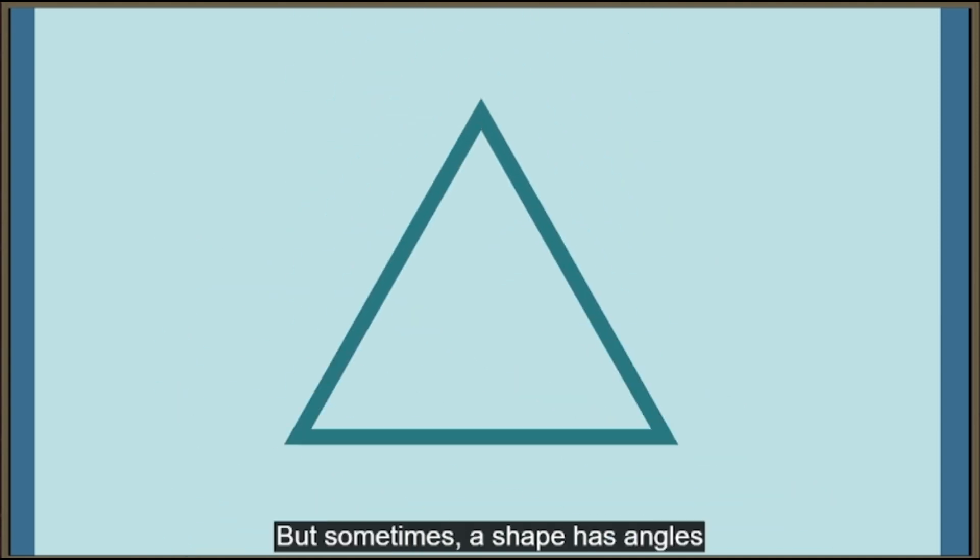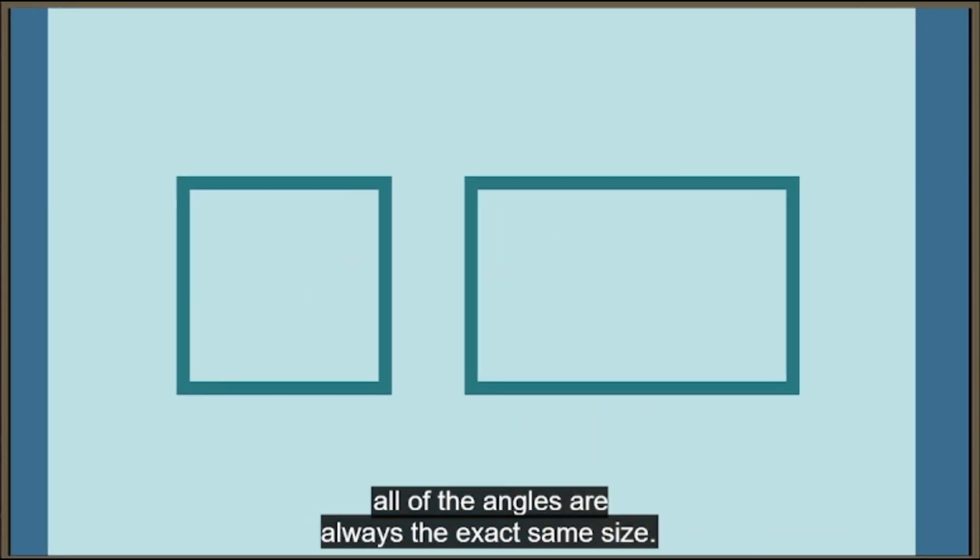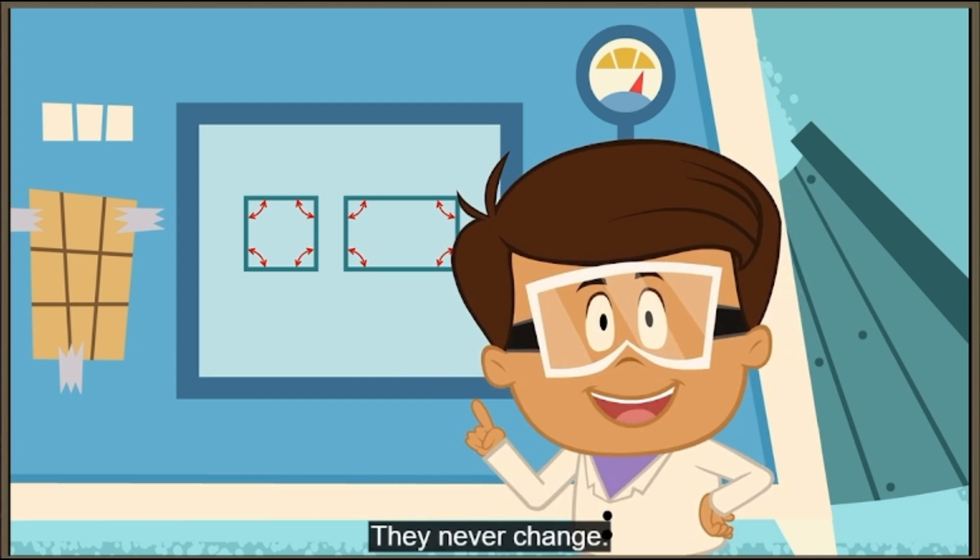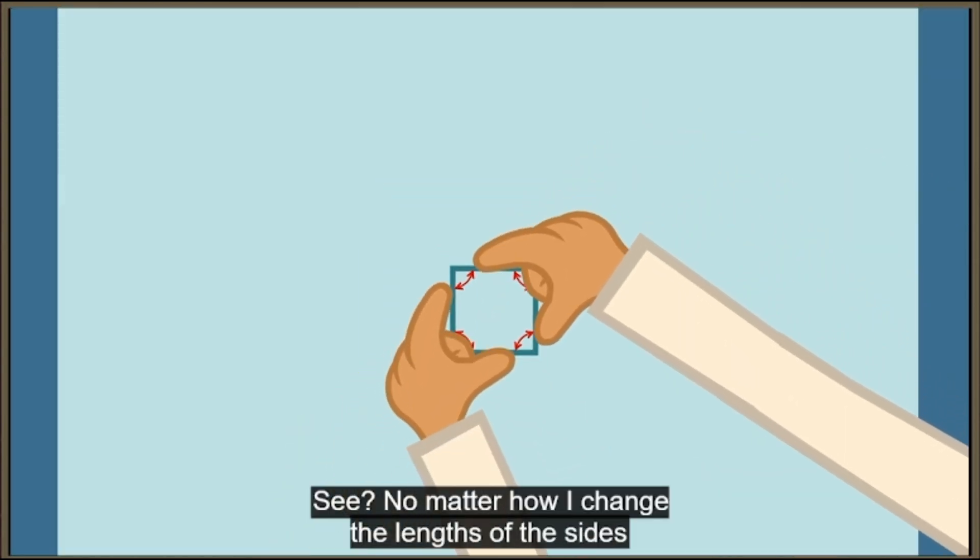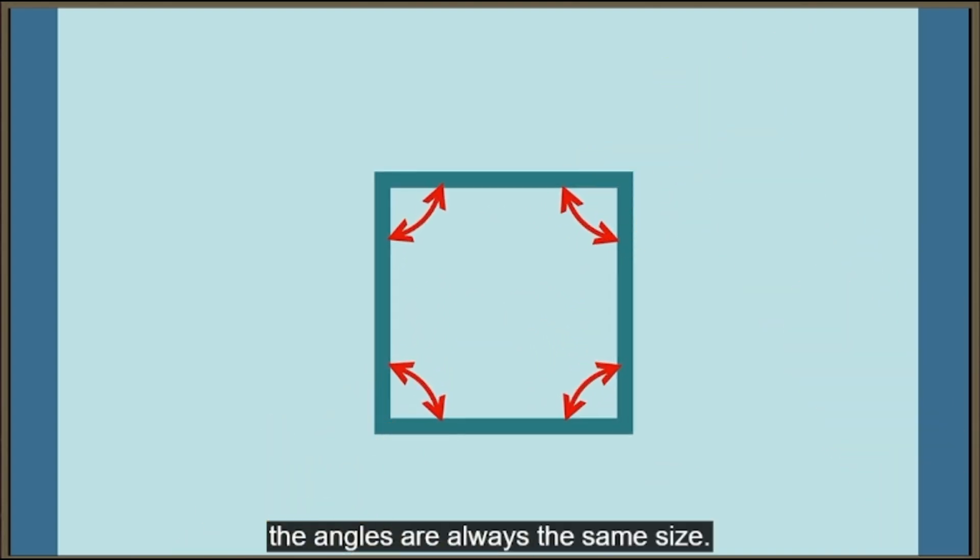But sometimes a shape has angles that are all exactly the same size. With squares and other rectangles, all of the angles are always the exact same size. They never change. See? No matter how I change the lengths of the sides, the angles are always the same size.